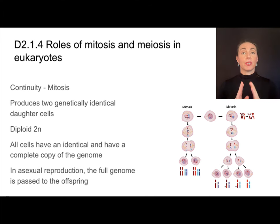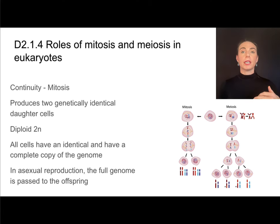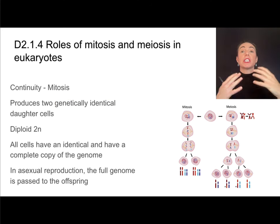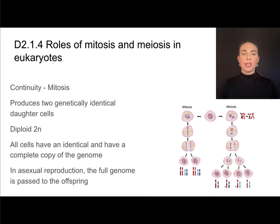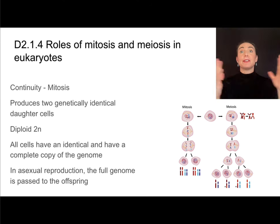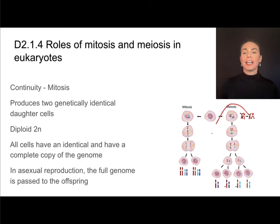Mitosis and meiosis are great examples of continuity and change. Continuity is well represented by mitosis because the goal of mitosis is two genetically identical daughter cells — that genetic information has been conserved and passed along. Each of the cells produced by mitosis are diploid, meaning their chromosomes come in pairs, denoted by the symbol 2N. All cells are identical and have a complete genome, and if an asexual reproducer uses mitosis, then all of their genome would be passed on to their offspring.